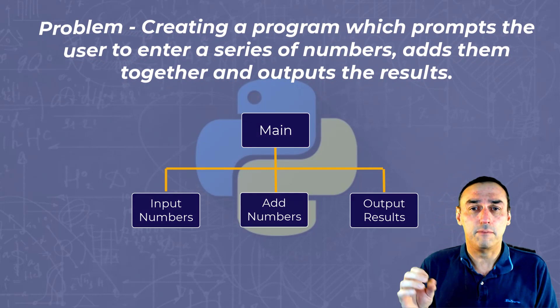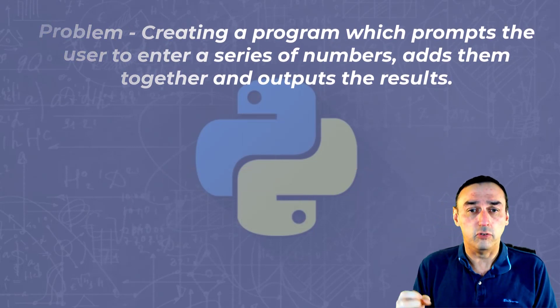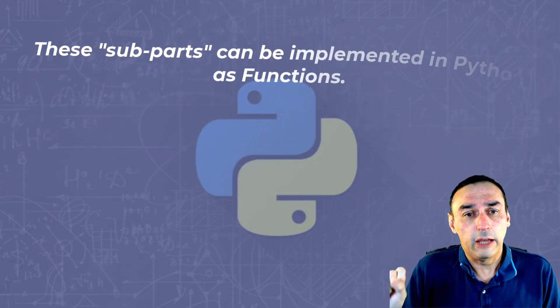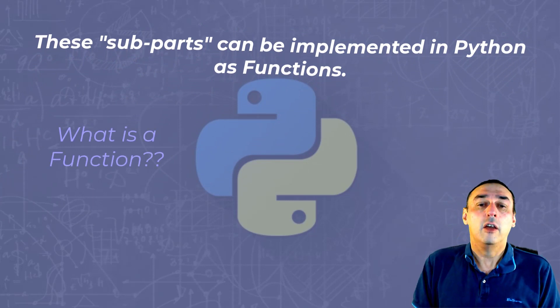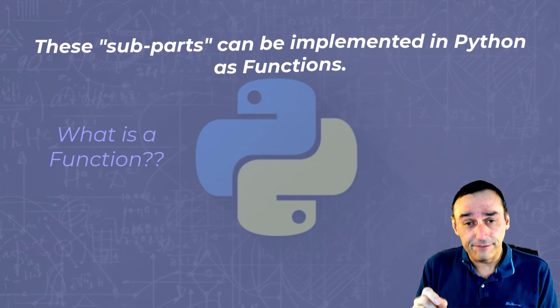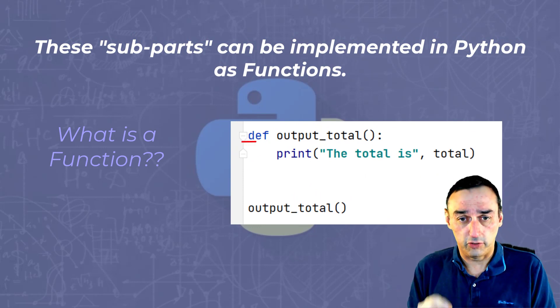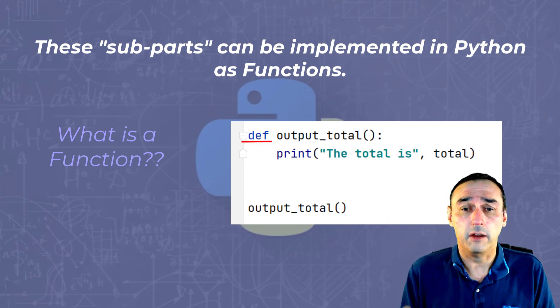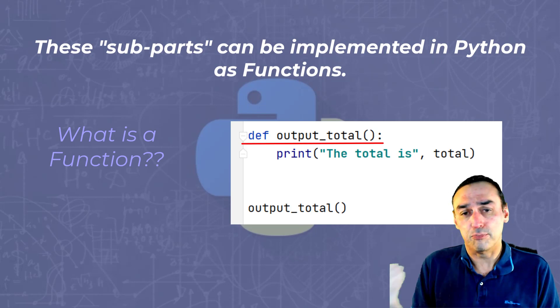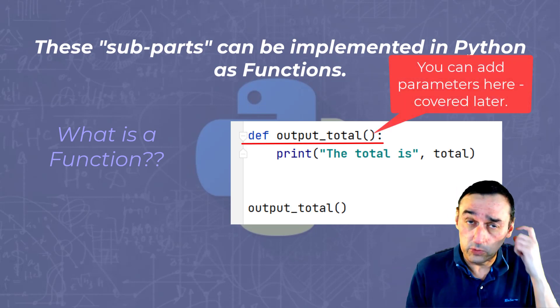Now we put subparts in a program in Python using functions. Functions in Python are defined using the def keyword, followed by the name of the function. So def, as you can see there, followed by output_total. And then in those brackets, you would put parameters, which we'll cover later.